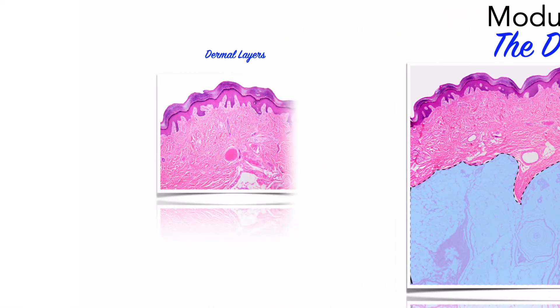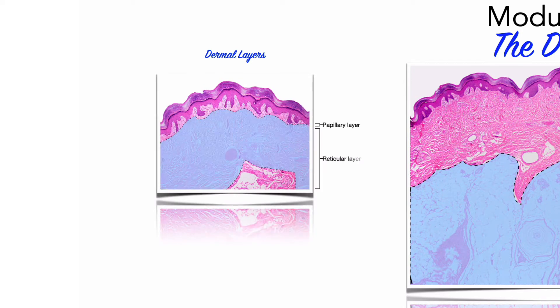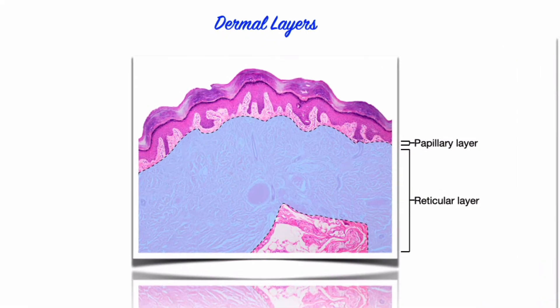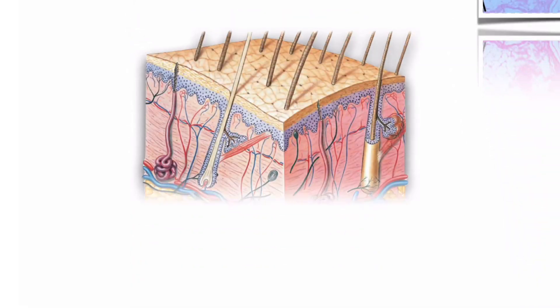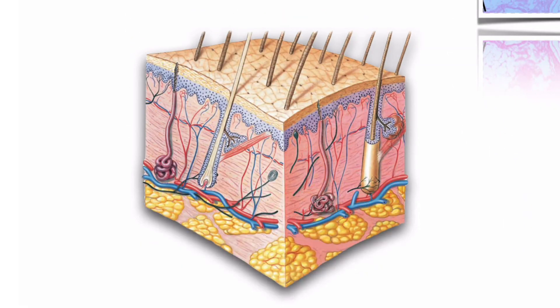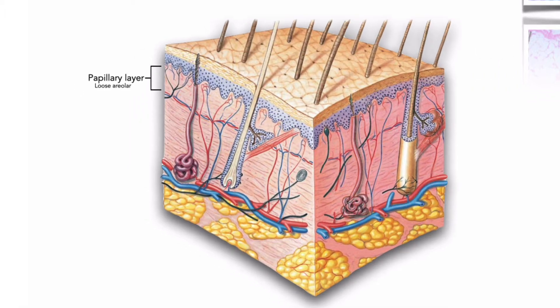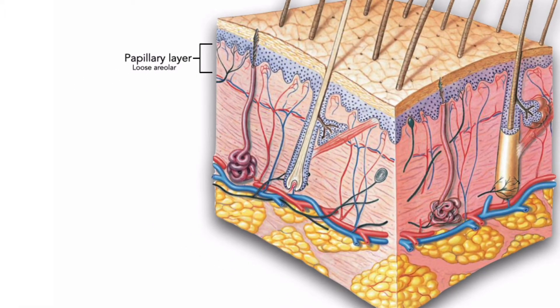The dermis has two major layers: a superficial papillary layer and a deeper reticular layer. The papillary layer, named after the dermal papillae, consists of loose areolar connective tissue that supports and nourishes the epidermis. This region contains the capillaries, lymphatic vessels, and sensory neurons that supply the surface of the skin.